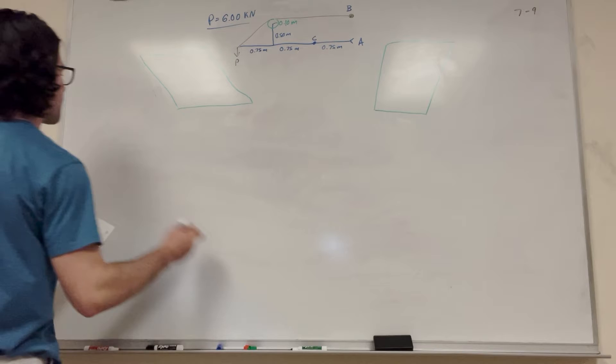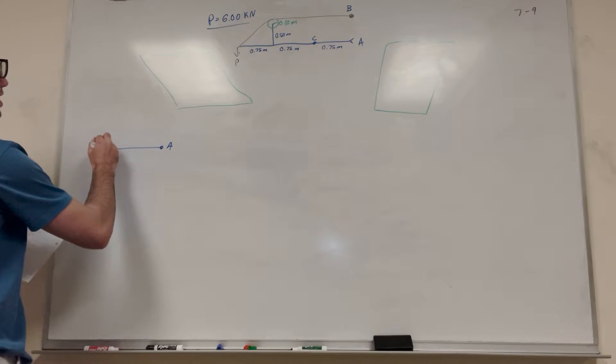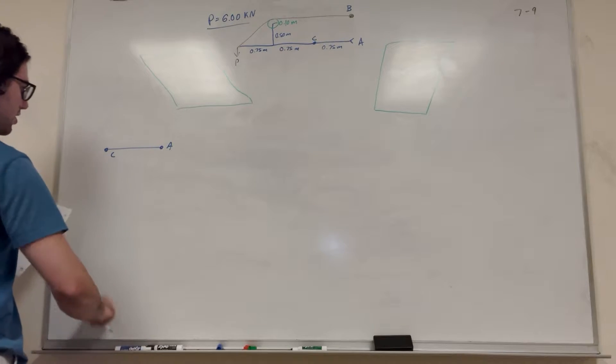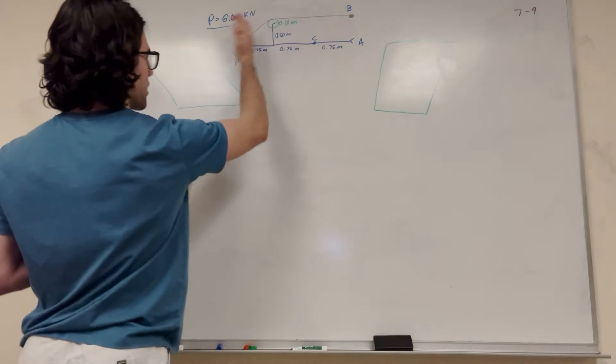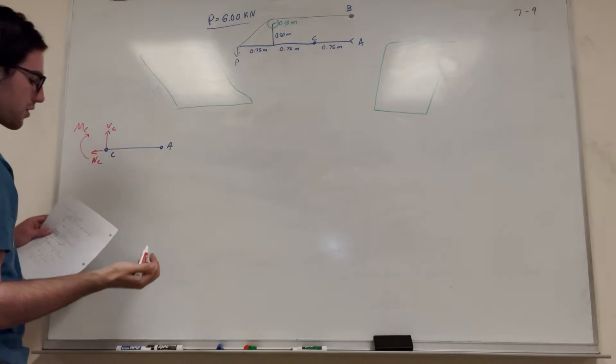So let's just draw our free body diagram. So here's A, and then here's C. So we took the cut, we cut everything to the left, so that means that we're going to need to consider that our moment is going to be going clockwise. So this is the moment of C. We're going to have the shear of C, and then our normal at C.